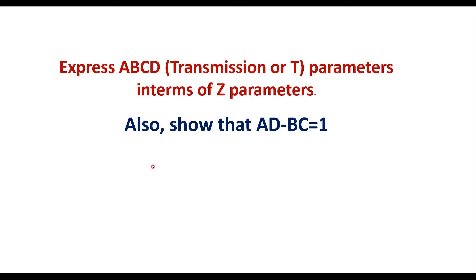In this video, we will learn how to express ABCD, also known as transmission or T parameters, in terms of Z parameters. We will also show that AD minus BC is equal to 1. First, we will try to convert or express ABCD parameters in terms of Z parameters. So first, let me define the ABCD parameters.